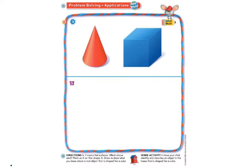At the top you have two shapes. You are going to listen to my story and guess which shape it is. Are you ready? I am a shape that has six flat surfaces. Which shape am I? Go ahead and point — which shape do you see has six flat surfaces? This one does. This is our cube with six flat surfaces.